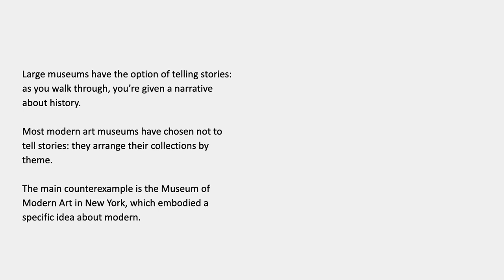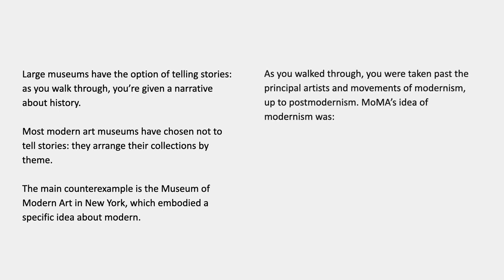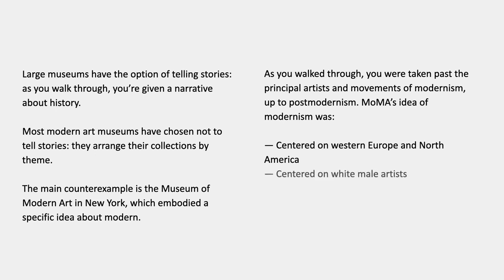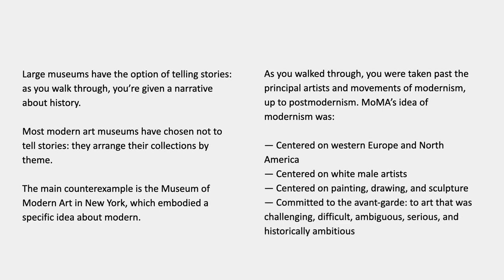MoMA was the main exemplar of a standard way of defining what modernism was. As you walked through, you were taken past principal artists and movements all the way up to postmodernism. There are various ways of describing that story. It was centered on Western Europe and North America, so modern art outside of those areas was marginalized or absent. It was centered on white male artists and on painting, drawing, and sculpture. And it was committed at all points to the avant-garde — art that was challenging or difficult, ambiguous, serious, and historically ambitious.